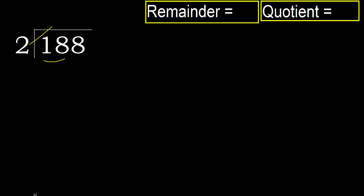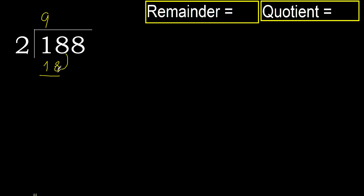2 multiplied by which number is nearest to 18, but not greater? 2 multiplied by 9 is 18, is not greater. 18 minus 18 is 0.